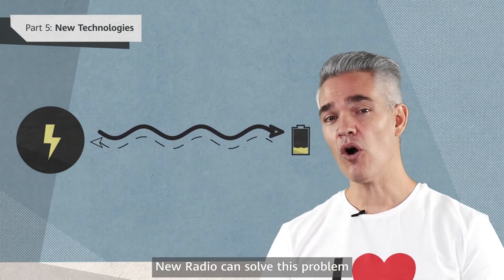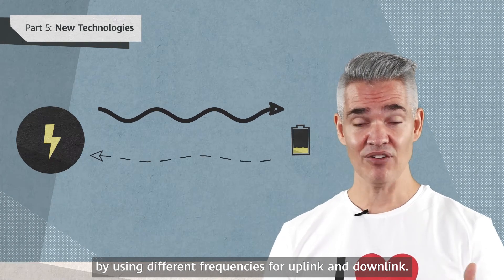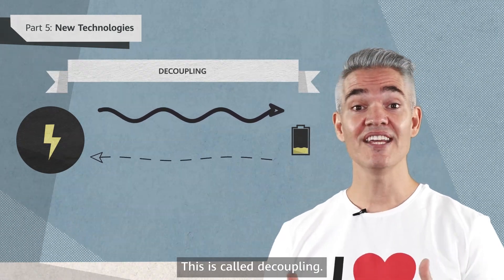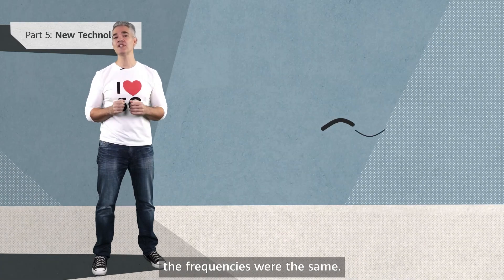New radio can solve this problem by using different frequencies for uplink and downlink. This is called decoupling. In previous generations of mobile networks, the frequencies were the same.